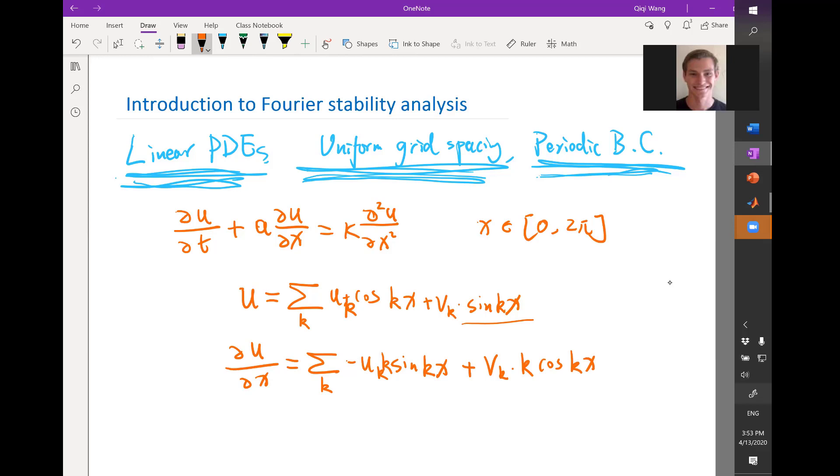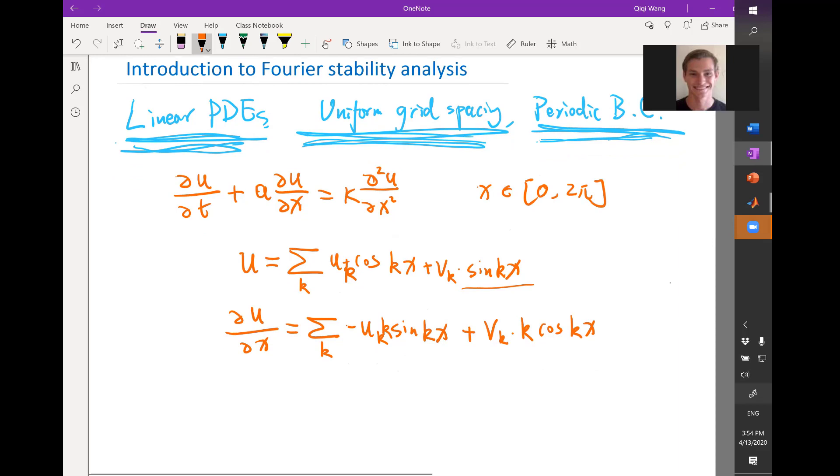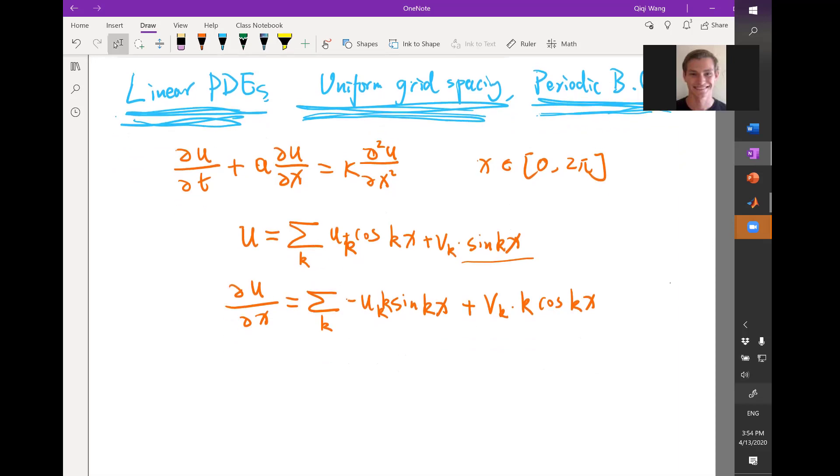Basically, the derivative operator goes away. You just have a bunch of switching u and v with some negative signs and you multiply things by k. That's kind of a good tradeoff. You get rid of the differential operator. You introduce some multiplications. I think that's pretty good tradeoff. It becomes much easier in some sense.